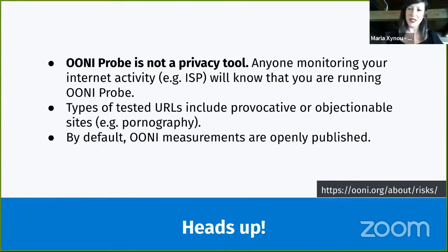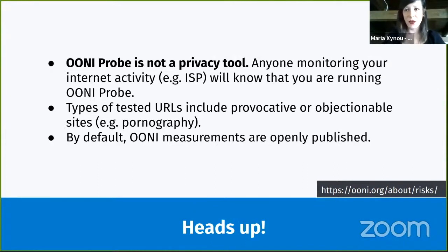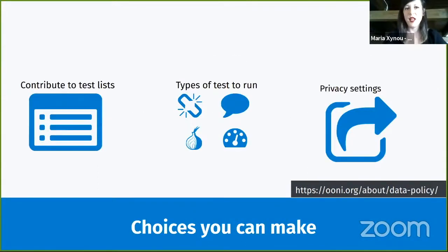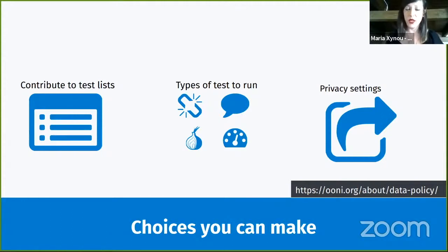Another thing to be aware of is that the default lists of websites you'll test include some categories of websites that might be fine to test in some countries but more provocative in others. If you'd like more control over which websites you're testing, there are various things you can do. You can contribute to the list of websites tested by OONI Probe — called test lists — and you can also determine which types of tests you run.